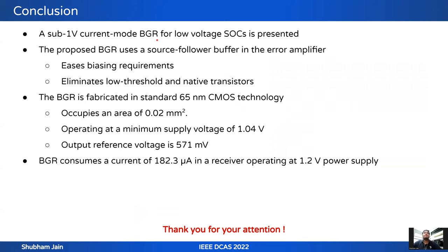In conclusion, a sub-1 volt current mode BGR for low voltage SOCs is presented. The proposed BGR uses a source follower buffer in the amplifier, which eases biasing requirements and eliminates the need for low threshold devices and native transistors. The BGR is fabricated in standard 65 nm CMOS technology, occupies an area of 0.2 mm², operates at a minimum supply of 1.04 V, and delivers an output voltage of 571 mV while consuming 182.3 μA at a 1.2 V supply.